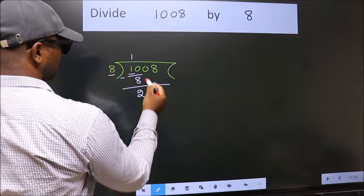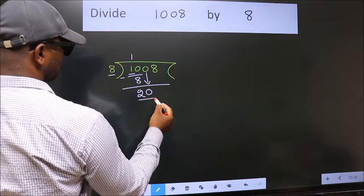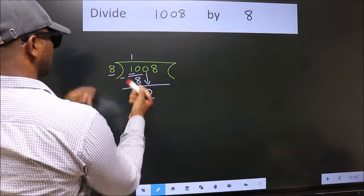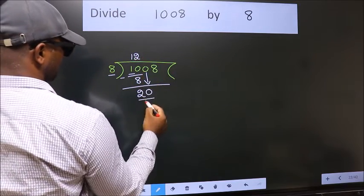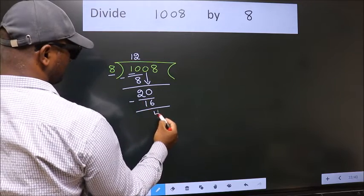After this, bring down the beside number, so 0 down. Now we have 20. A number close to 20 in the 8 table is 8 twos, 16. Now we subtract and get 4.